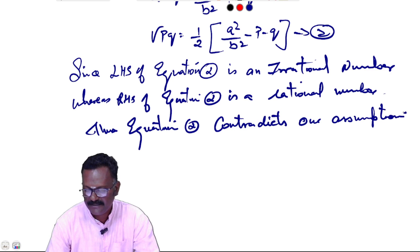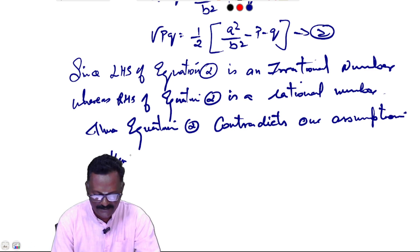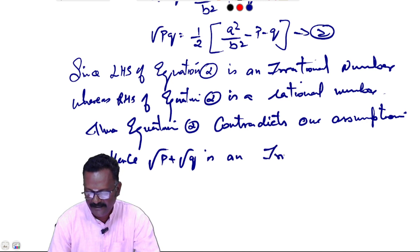Our assumption is wrong. Hence, √p + √q is an irrational number.